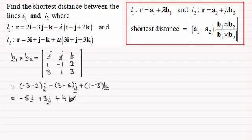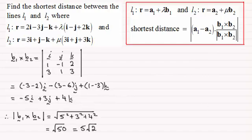We need to work out the magnitude of this. This is the denominator here, the magnitude of the cross product between B1 and B2. So working out the magnitude of that vector gives us this: the square root of 50, or 5 root 2.